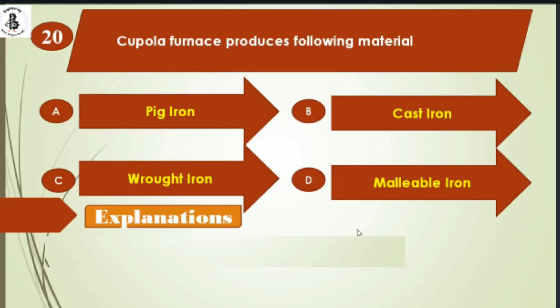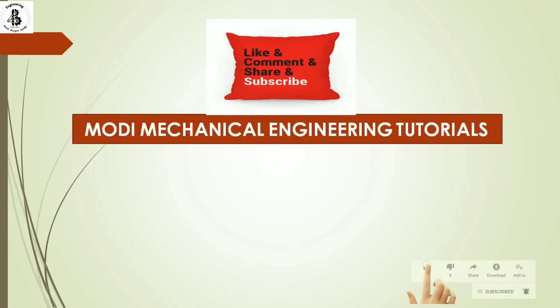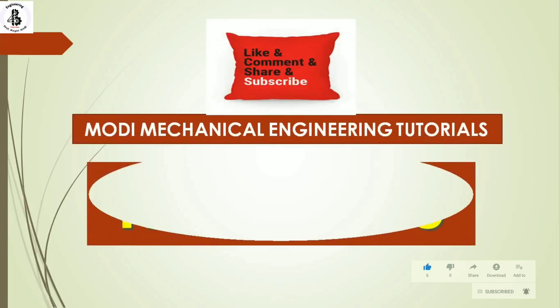The cupola furnace produces cast iron, so option B is the right answer. I hope you liked this video. If you did, please subscribe and share more mechanical engineering tutorials. Thank you so much and keep watching.